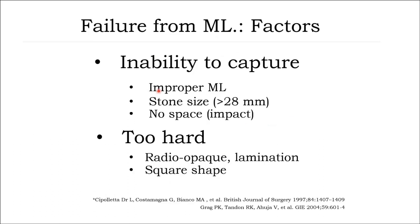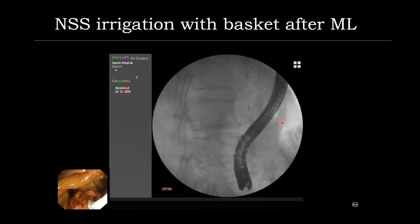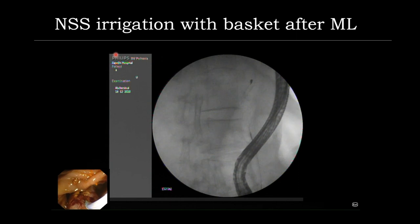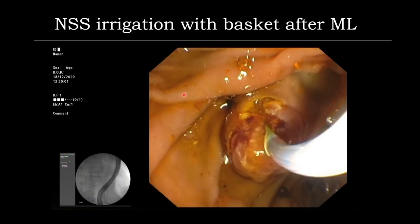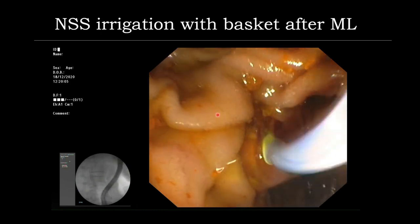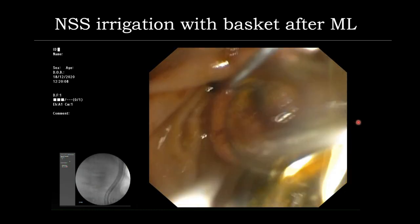Reasons for failure include inability to capture the stone in proper mechanical lithotripsy, stone size — especially more than 28 mm — and no space due to infection. Or the stone is too hard, with calcified lamination or square shape. After you break the stone and have many fragments, even if you sweep with a balloon, I recommend putting the basket in with water irrigation, pulling back and checking — this technique removes small fragments and minimizes residual stones.